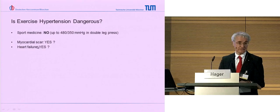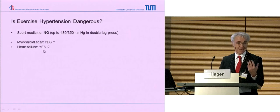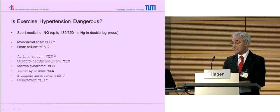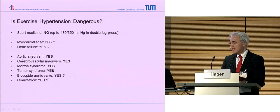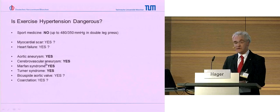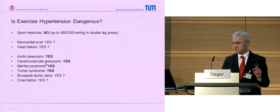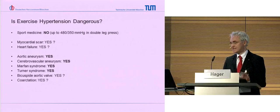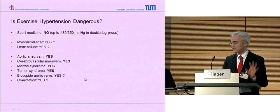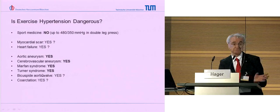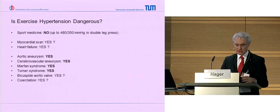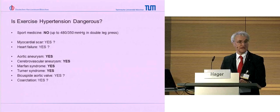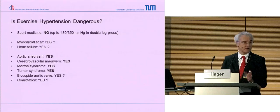We have to ask ourselves: is exercise hypertension dangerous? With aortic aneurysm, I would certainly say yes. With cerebrovascular aneurysm - that is 10% of aortic coarctation patients - we certainly say yes. Marfan syndrome: no question, yes. Turner syndrome: no question, yes. Bicuspid aortic valve: I don't know, probably maybe not. Coarctation with normal ascending aortic size and a good surgical result: I don't know, maybe yes.